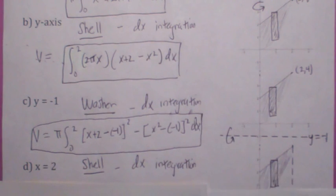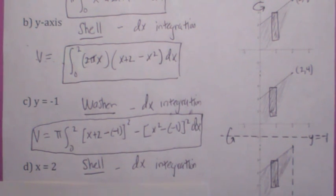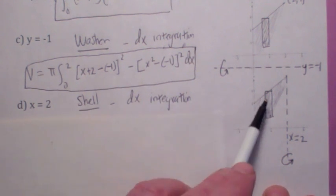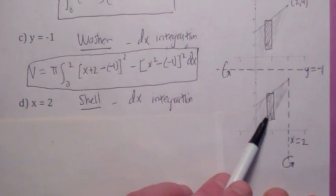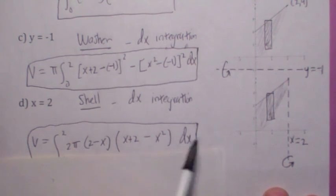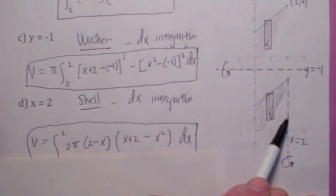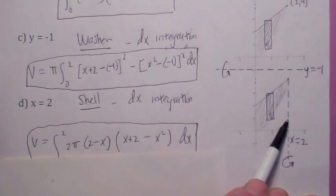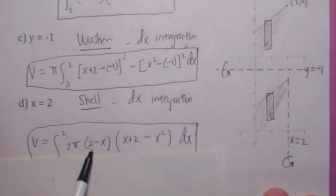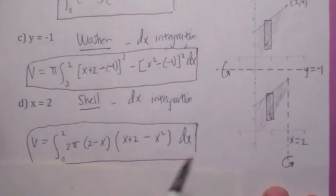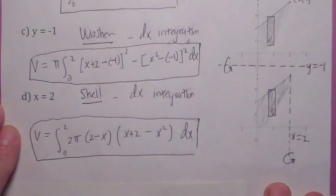And the last one: when you revolve around the line x equals 2, the shell method is the one to use because you could do it all in one integral. It becomes 2π times the distance to the axis of revolution. The distance from x sub i star to here — 2 minus the x-coordinate — times the length of the rectangle, which is top minus bottom. It's a dx integration because you're adding along the x-axis. Alright, we'll see you later. Bye-bye.